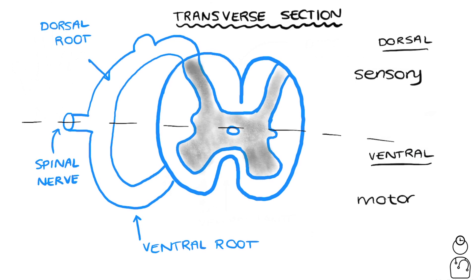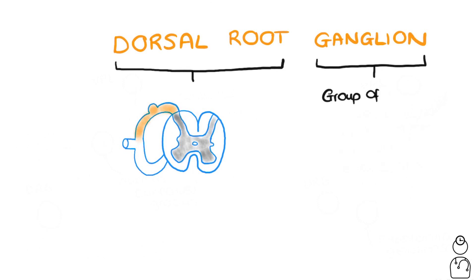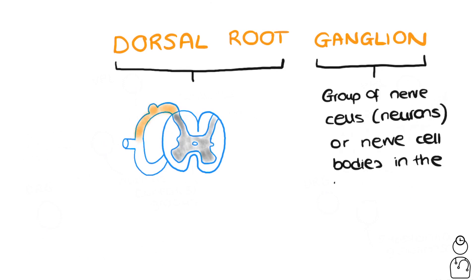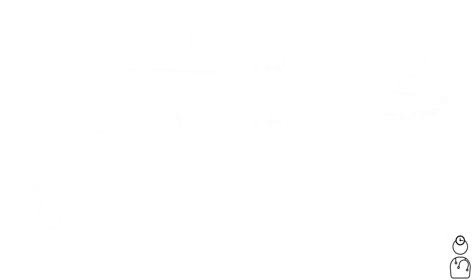Now, what is that little bump over there in the dorsal root? This is the dorsal root ganglion. We know the dorsal root is this part of the spinal cord. A ganglion, in this context, just means a group of nerve cells or nerve cell bodies in the peripheral nervous system. In basic terms, it's just a clump of sensory nerve cell bodies that sits in the dorsal root.